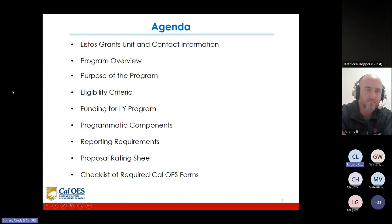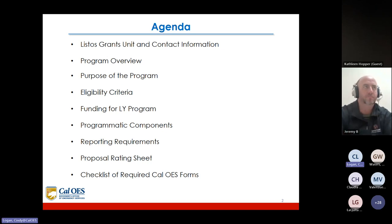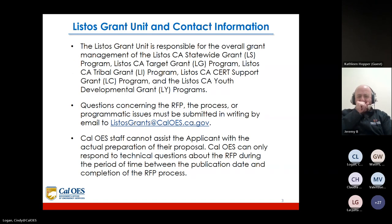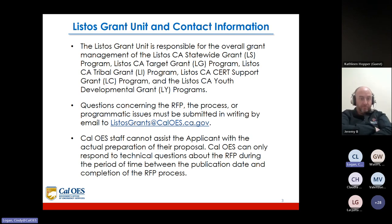Here's the agenda. We're going to go over the ListosGrants unit and contact information, program overview, purpose of the grant, purpose of the program, eligibility criteria, funding for the program, programmatic components, reporting requirements, proposal rating sheet, and the checklist of required Cal OES forms. The ListosGrants unit is responsible for the overall grant management of the Listos California Statewide Grant Program, the Target Grant Program, Tribal Grant Program, Cert Support Grant Program, and the Youth Development Grant Programs.